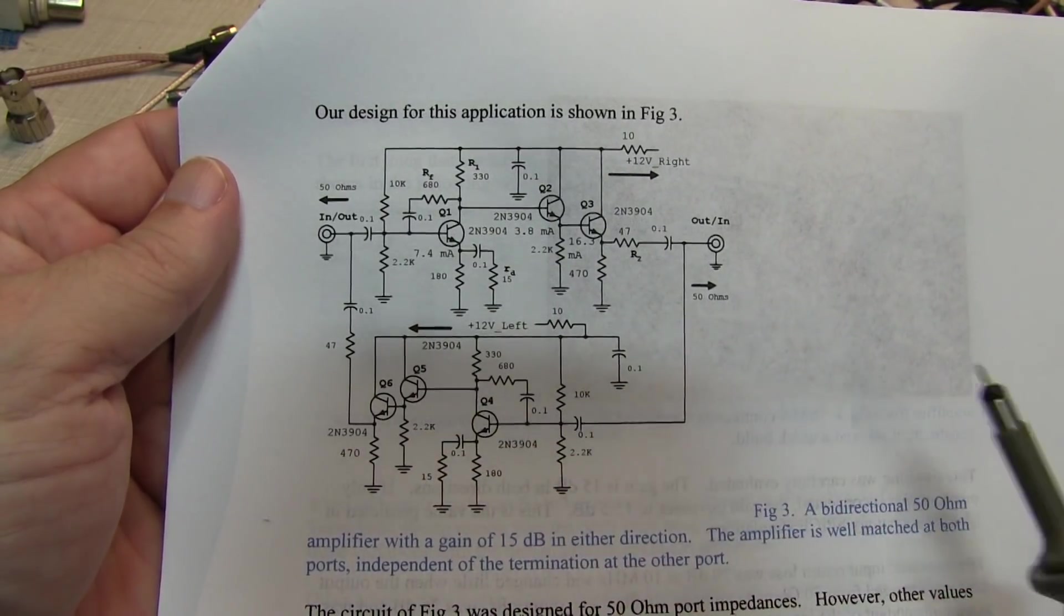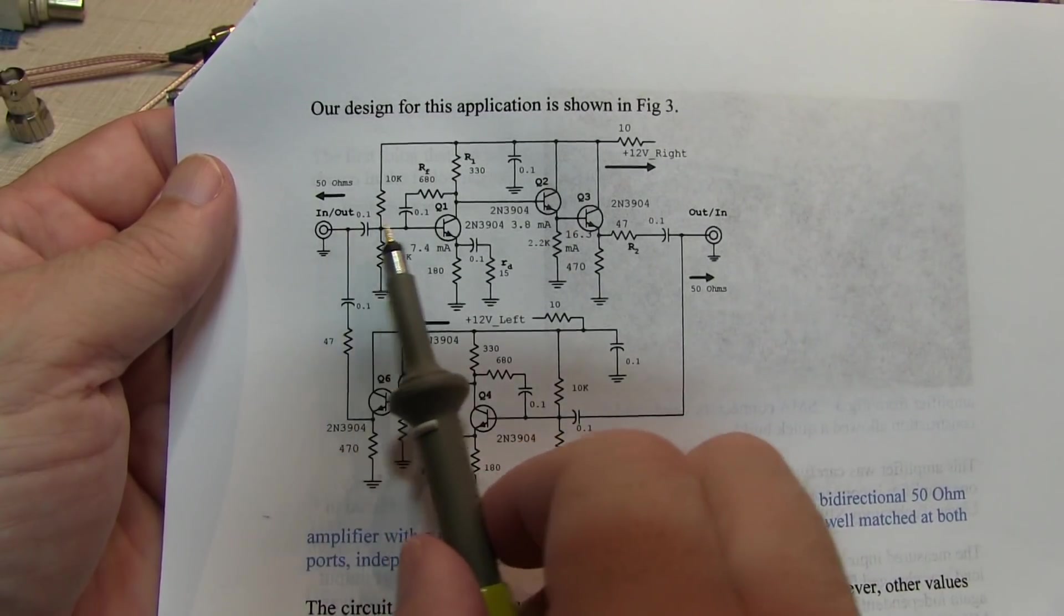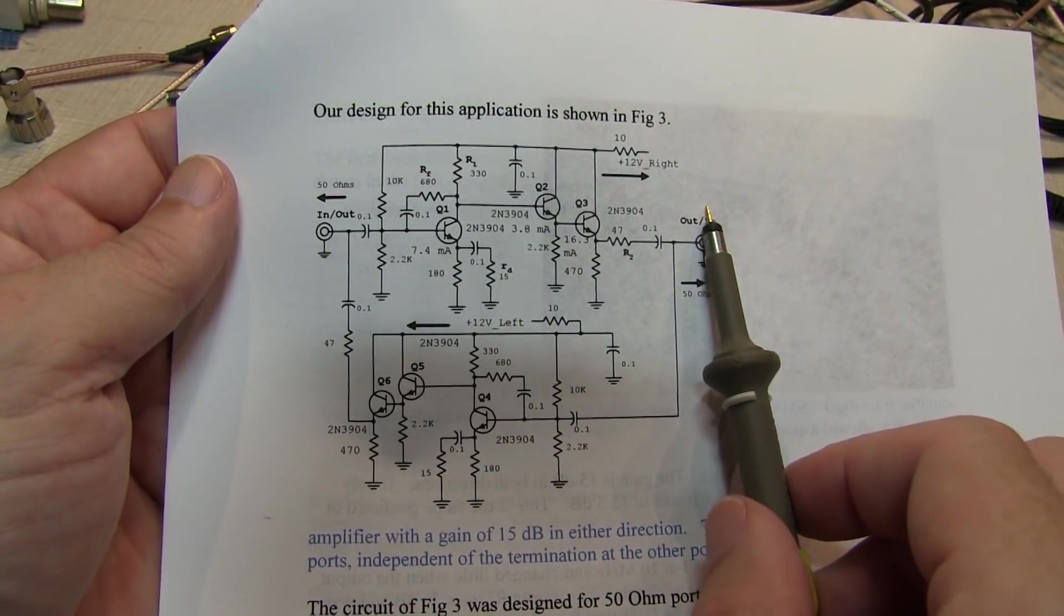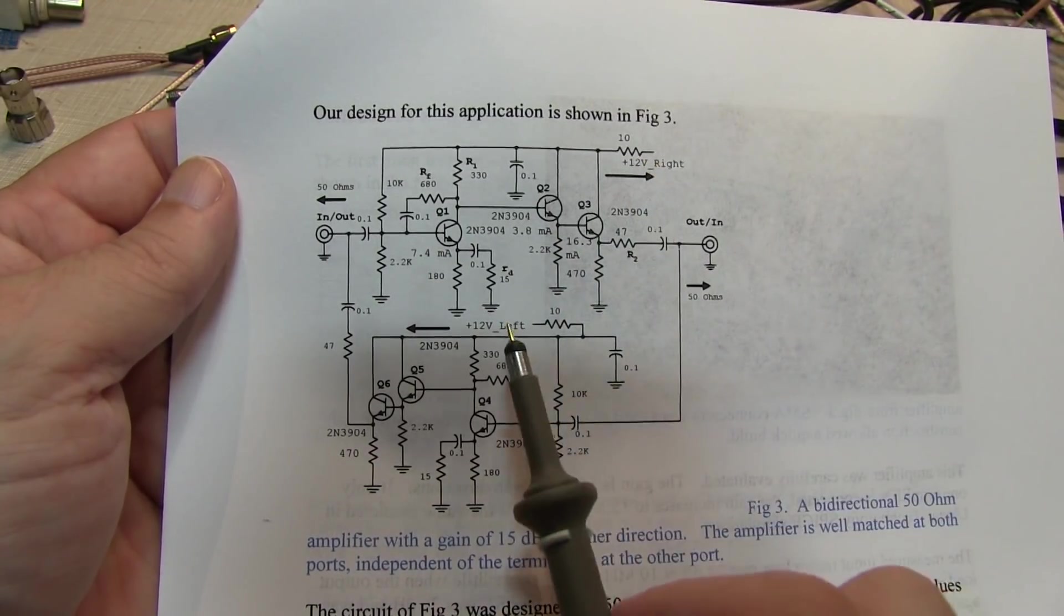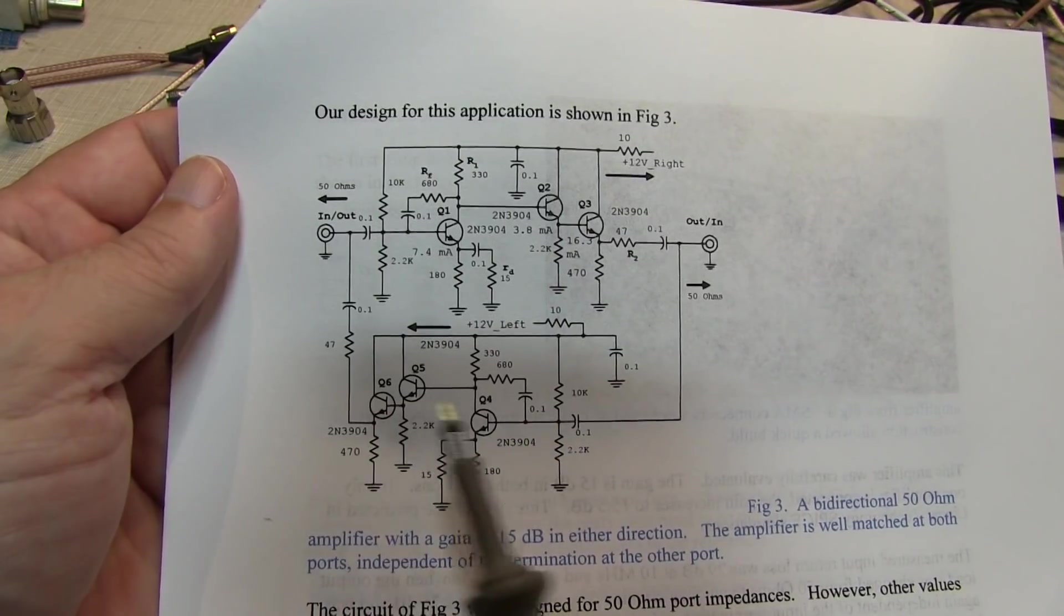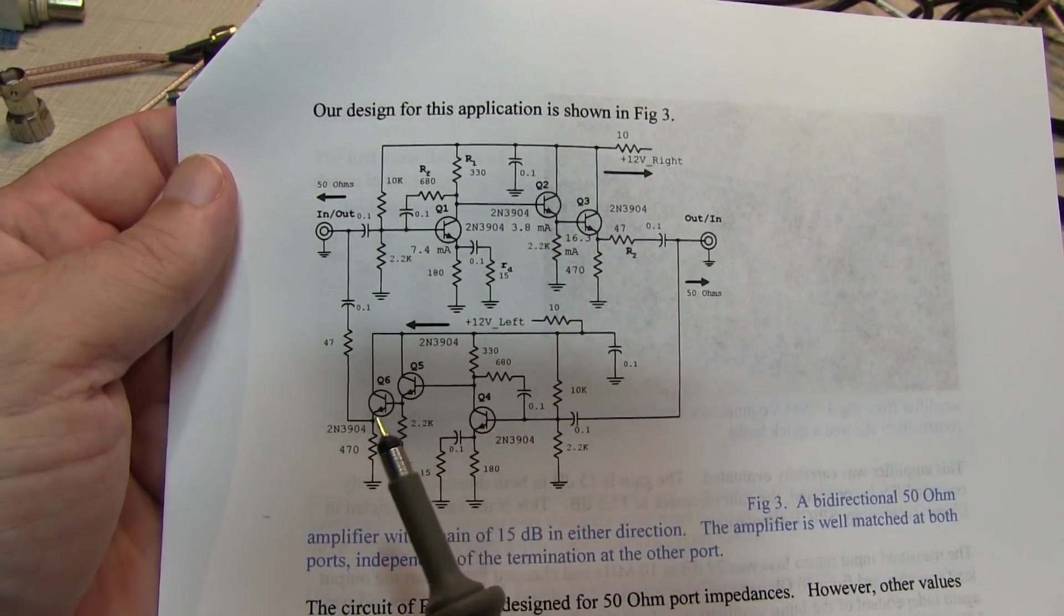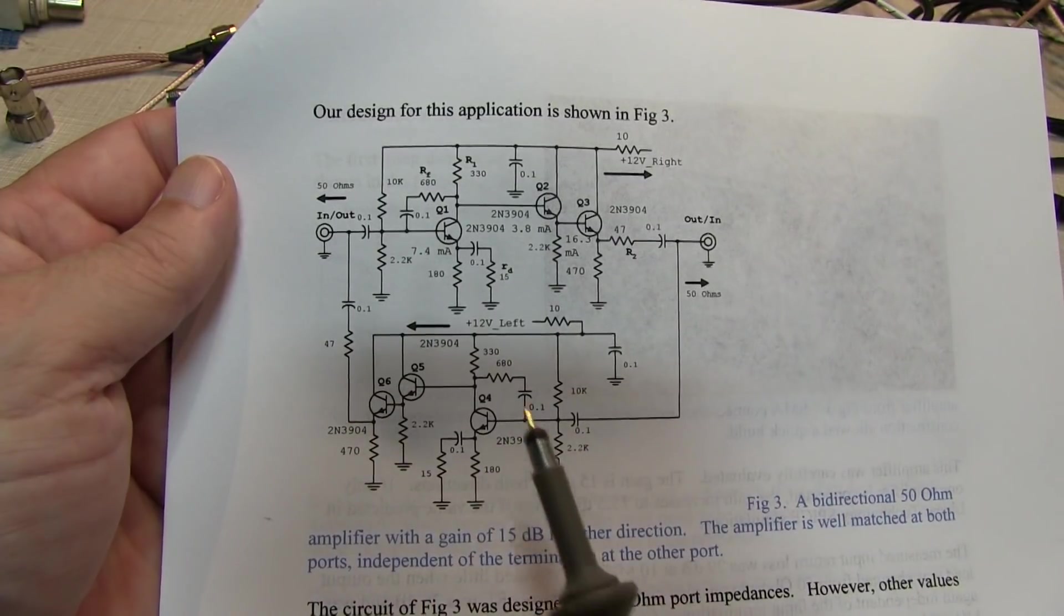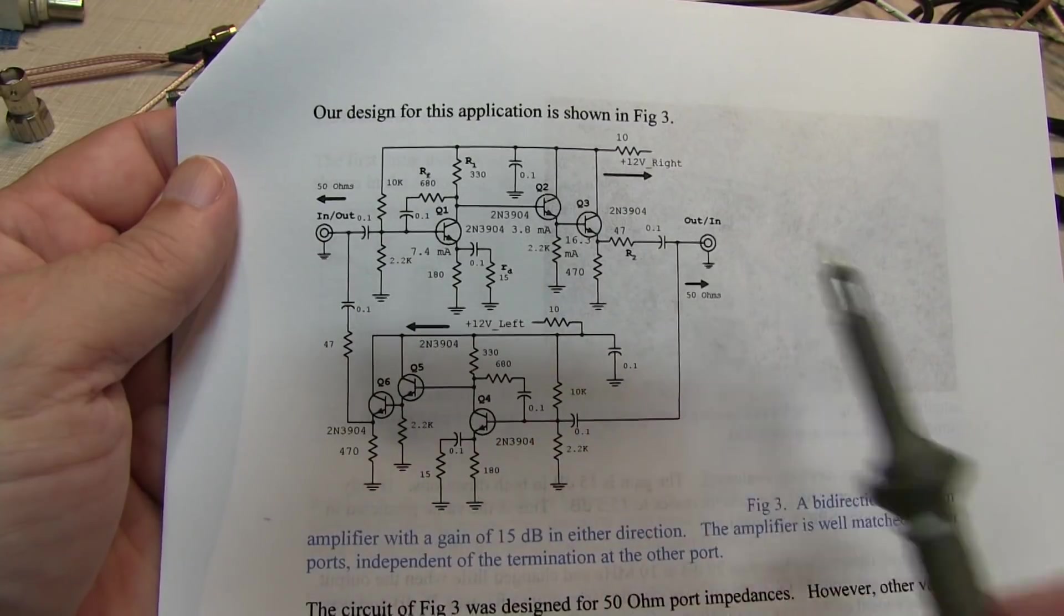It's described as a bidirectional amplifier, but what it really is is two amplifier stages, one that goes in this direction and one that goes in this direction, and they're powered up independently. One for the transmit path, one for the receive path. The idea is that these amplifiers behave nicely with input and output impedance regardless of the load presented. The circuit that's powered down doesn't affect the operation of the circuit that's powered up.